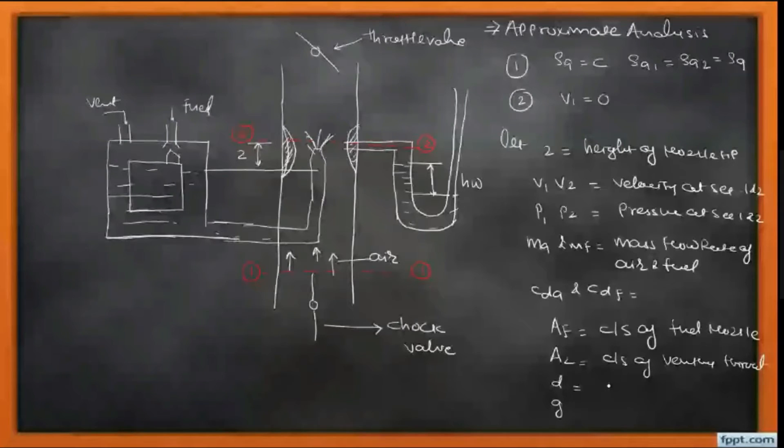Now we are applying the steady flow energy equation, or we can say the Bernoulli equation, for the air at section 1 and 2. So we know that P1/ρA1 + V1²/2 equals P2/ρA2 plus V2²/2.